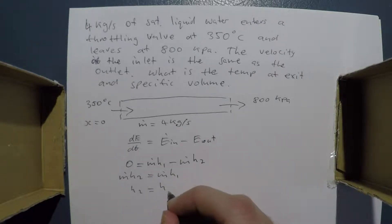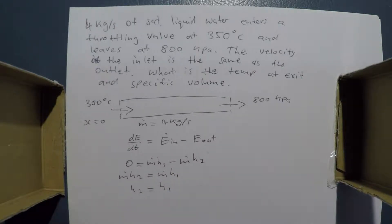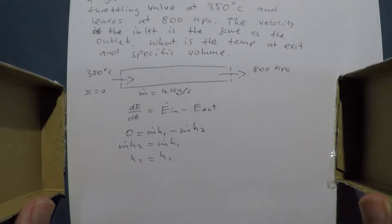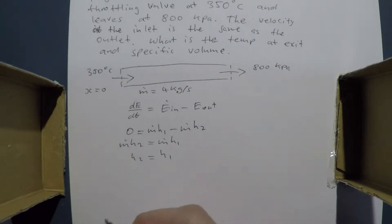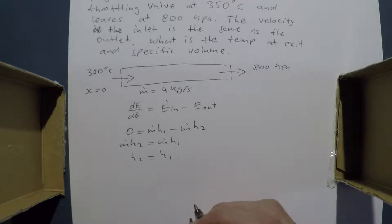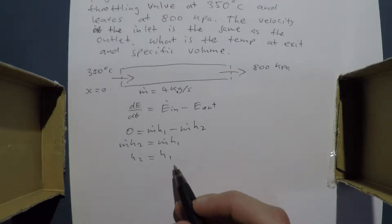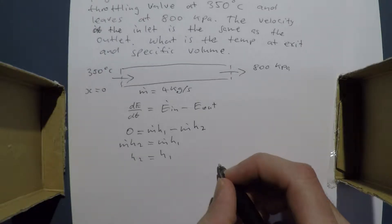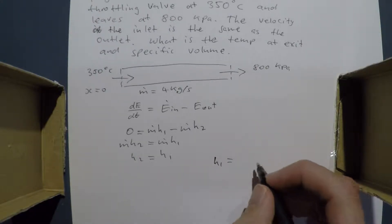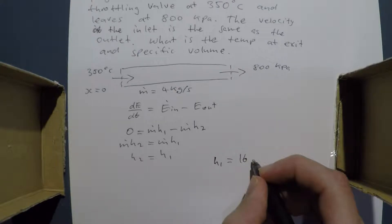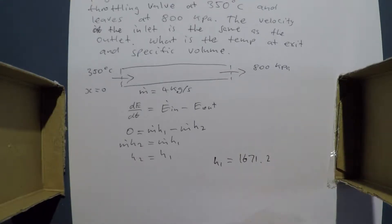Dividing by the mass flow rate leaves us with H2 equals H1, where H2 is the enthalpy out and H1 is the enthalpy in. Looking up our data tables, we find that H1 is equal to 1671.2 kJ/kg.